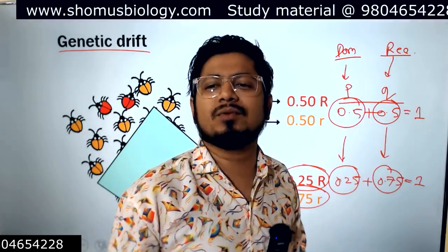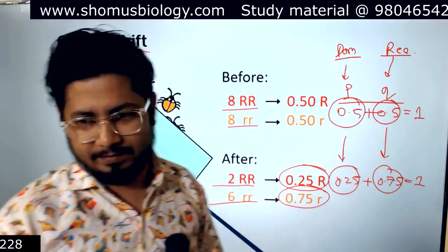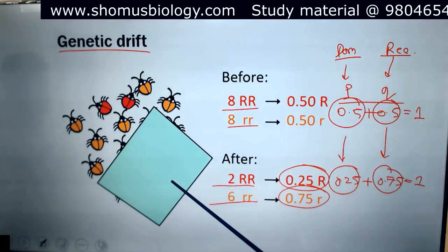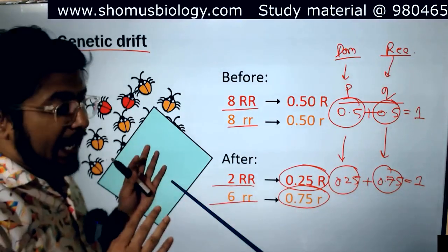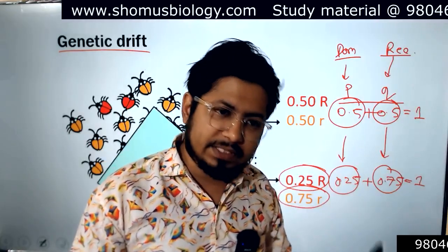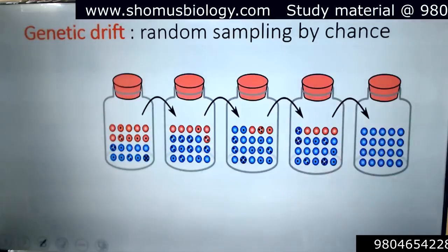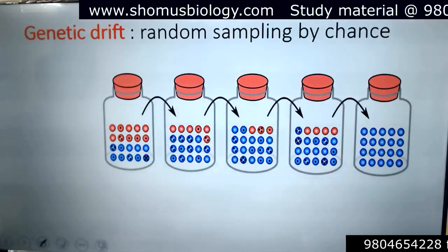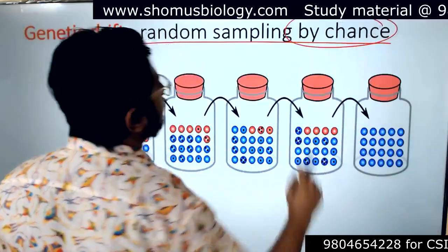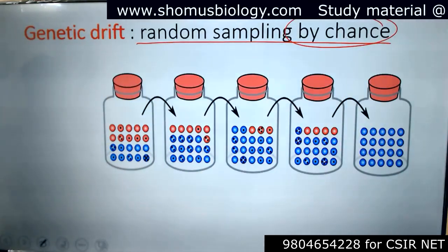So there is a change in allele frequency — it was 0.5 and 0.5 earlier, and now it's 0.25 and 0.75. This change in allele frequency demonstrates that yes, there is change in allele frequency, and this is genetic drift. Genetic drift can alter the allele frequency. Genetic drift is known as random sampling by chance.